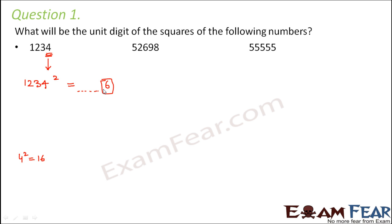We have discussed in detail that even if you perform actual multiplication, you would see it very clearly that finding out the square means you are multiplying 1234 with 1234. So obviously the last digit is decided by the multiplication of the unit digits of the number. That is 4 into 4, which is 16. So the unit's digit would be 6.